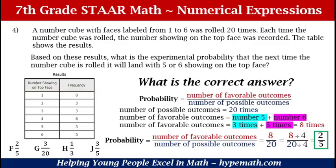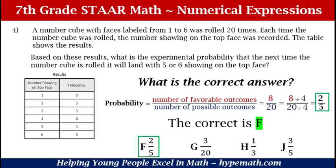Looking at our answer choices, our fraction in simplest form is 2 out of 5. If you said F, you are absolutely correct — 2 fifths! If you got this problem correct, high five. If not, no worries — the more you work at math, the better you become.